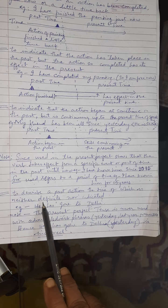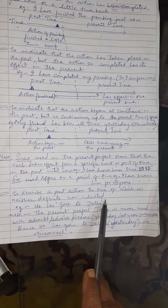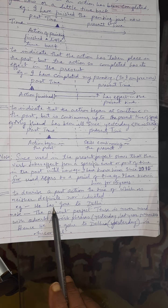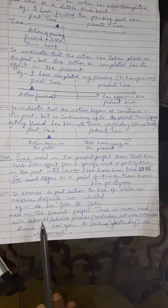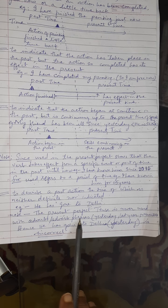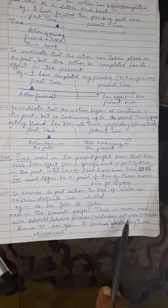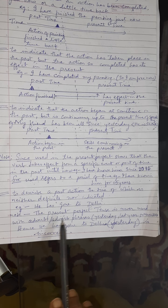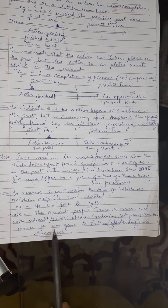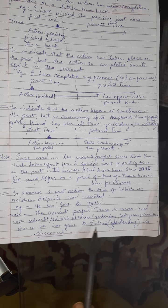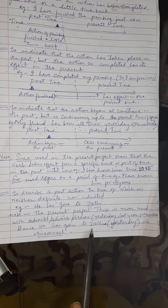To describe a past action the time of which is neither definite nor indicated, use the present perfect form — but keep in mind you cannot use adverbs or adverb phrases like 'yesterday' or 'last year.' Therefore you can frame it as 'He has gone to Delhi,' but adding 'yesterday' makes it an incorrect sentence.